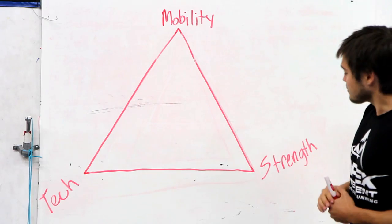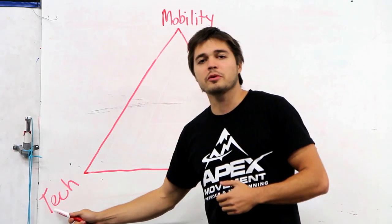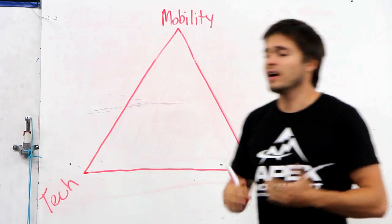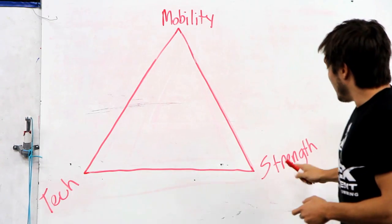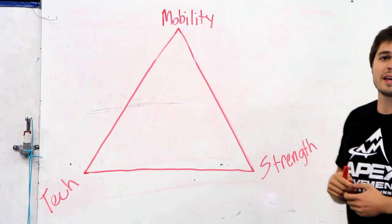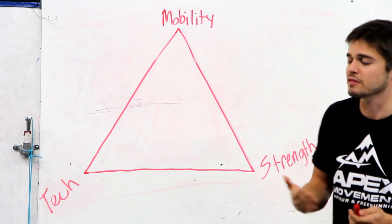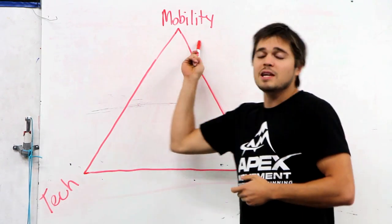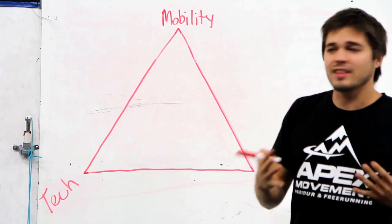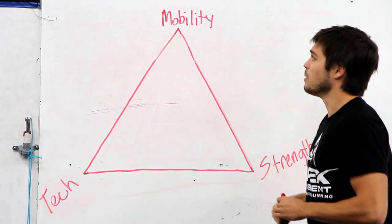Take myself for example. I was always pretty good about my technique. I had good landings. I wasn't reckless about my training. I also had good strength. I came from a football and weightlifting background. I've been doing deadlifts and squats for a while before I started parkour.